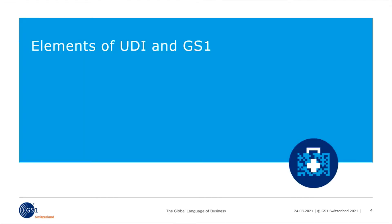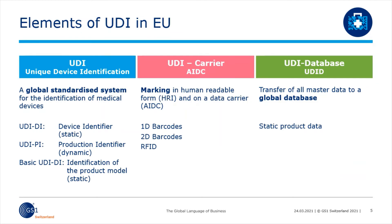Now I'd like to show you the elements of UDI and how GS1 covers these elements. On this overview, you can see the three elements of the UDI in Europe. These elements include unique identification, the carrier, and the database in which the required data is entered.